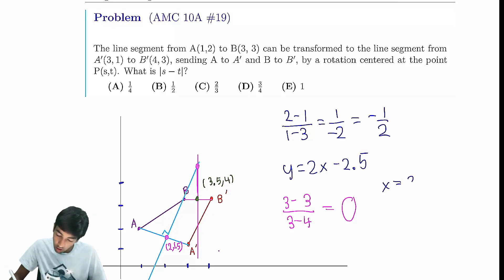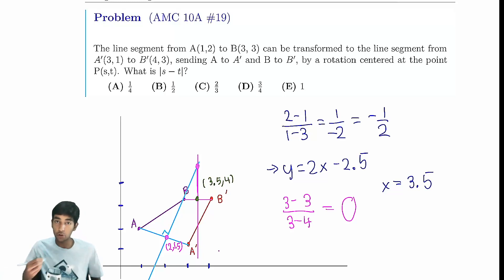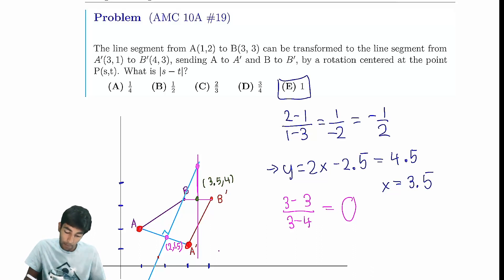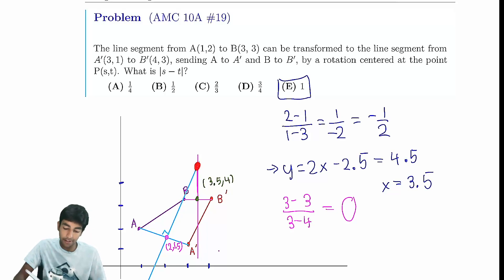Now we have our two lines and just need to find their intersection. We plug x equals 3.5 into the first equation: y equals 2 times 3.5 minus 2.5, which is 7 minus 2.5, giving y equals 4.5. The coordinate difference is just 1. The key idea is that when you rotate about a center, that center is equidistant from corresponding points, so it must lie on each perpendicular bisector — and therefore at their intersection.